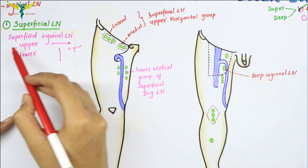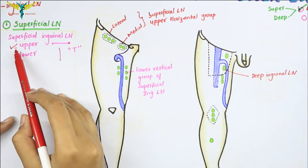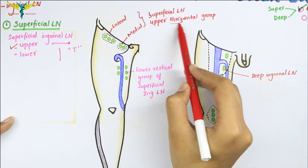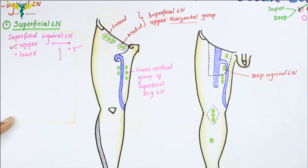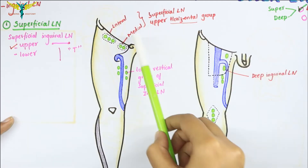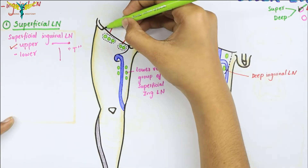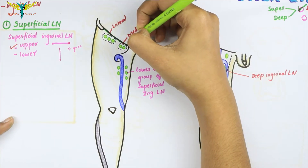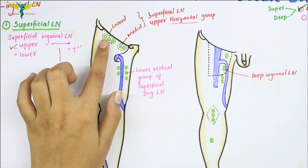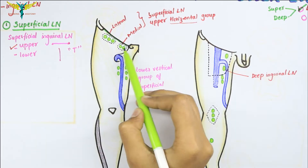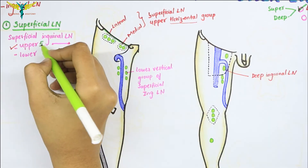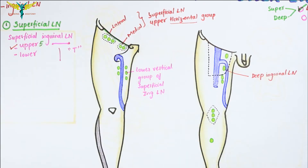Now let's talk about the upper group first. The upper group lies horizontally, below the inguinal ligament. In this diagram, this ligament is the inguinal ligament, and the upper horizontal group of the superficial lymph nodes lies below the inguinal ligament. The upper group consists of five lymph nodes.